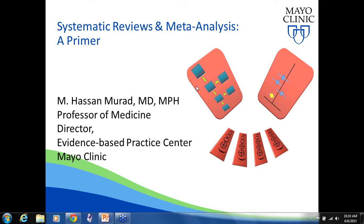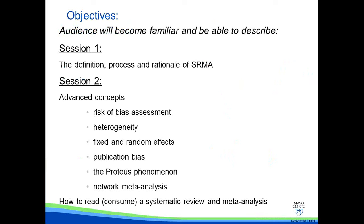I would like to thank everyone attending today. We will continue from last week and finish talking about systematic reviews and meta-analysis. Today we are going to cover advanced concepts such as risk of bias, heterogeneity, fixed and random effects, publication bias, and other advanced concepts. At the end, I will introduce the user's guide to the medical literature framework for reading or consuming a systematic review and meta-analysis.